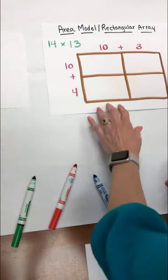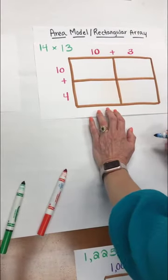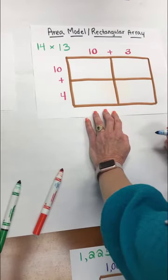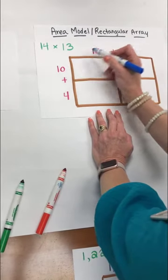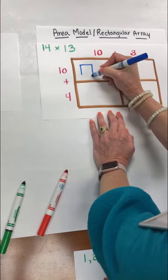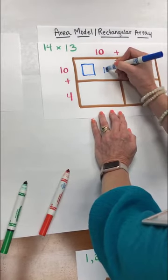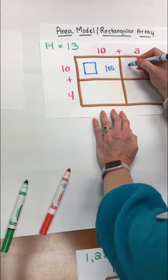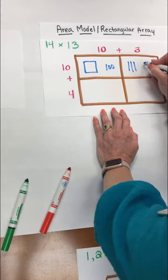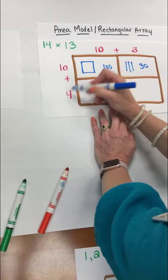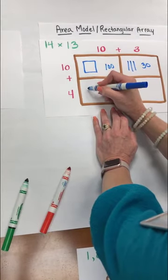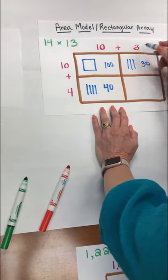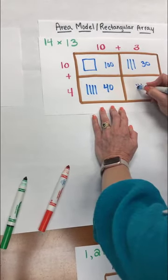Alright so let's show what our 14 times 13 is going to look like in our area model or rectangular array. So again 10 times 10 is our 100. I'm going to show both with the picture and the number. 10 times 3 is my 30. 4 times 10 is my 40. And my 4 times 3 is my 12.